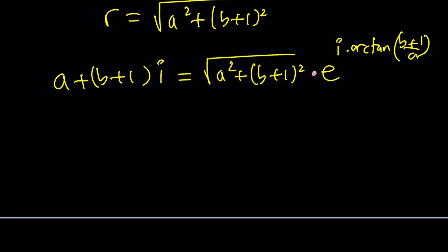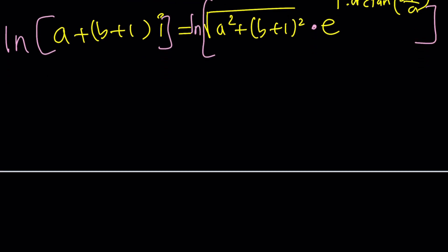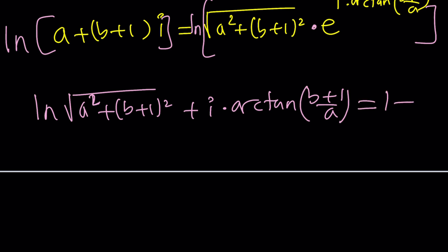So now, let's go ahead and natural log both sides. When you ln the left-hand side, the right-hand side is going to be ln of this square root of a squared plus b plus 1 squared, plus i times this guy over here, the theta, the infamous theta. And guess what? This is equal to 1 plus i. This is the best part. Look at that. This is 1 and this is 1. Beautiful.